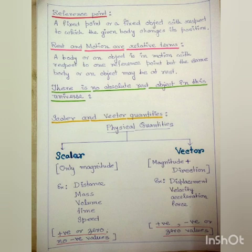Vector quantities have both magnitude and direction. Examples are displacement, velocity, acceleration, force, etc. Vector quantities can have positive, negative, or zero values.